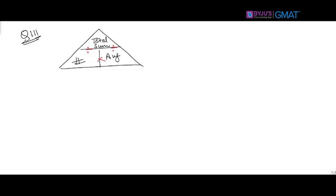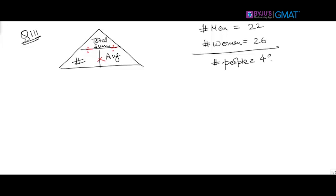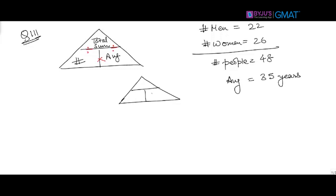Now let's look at the given information. In a party, the number of men is 22 and the number of women is 26, so the total number of people is 48, whose average age is exactly 35 years. Using the average triangle, I have number of people as 48 and average age as 35. The missing item is the total sum, so 48 multiplied by 35 gives 1680.